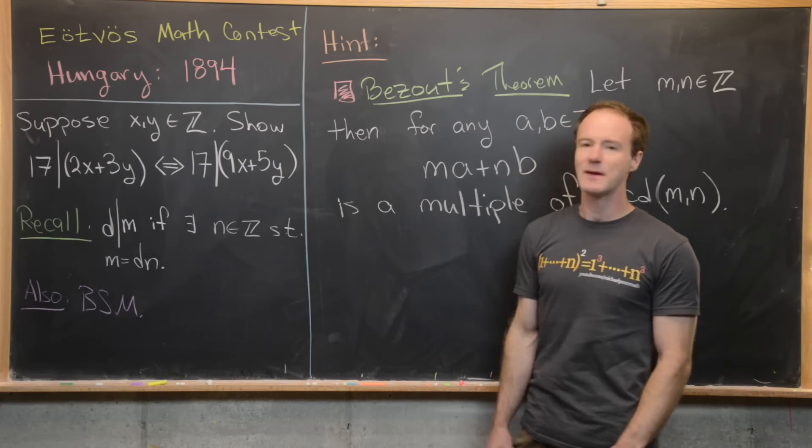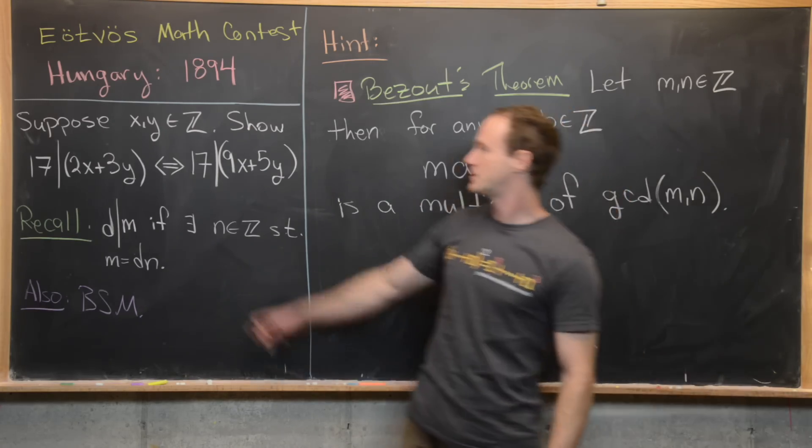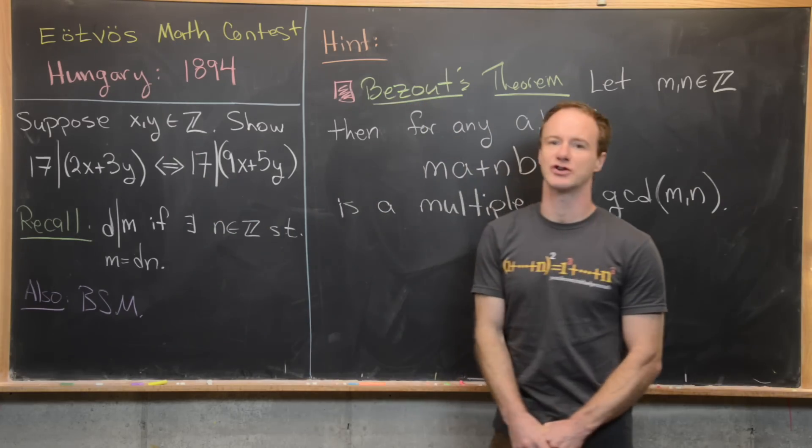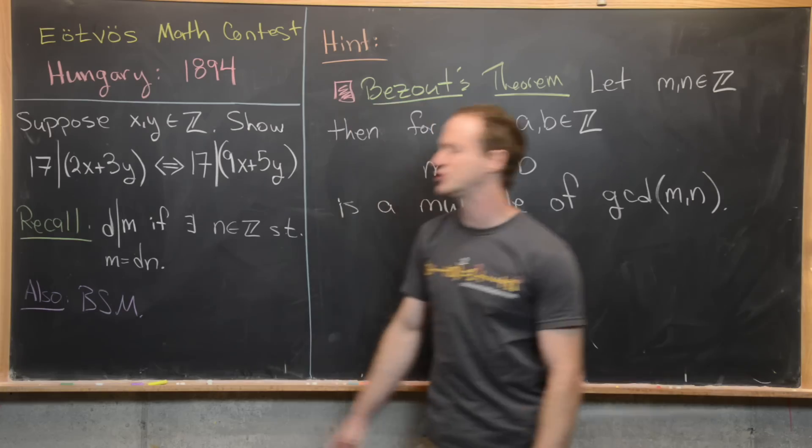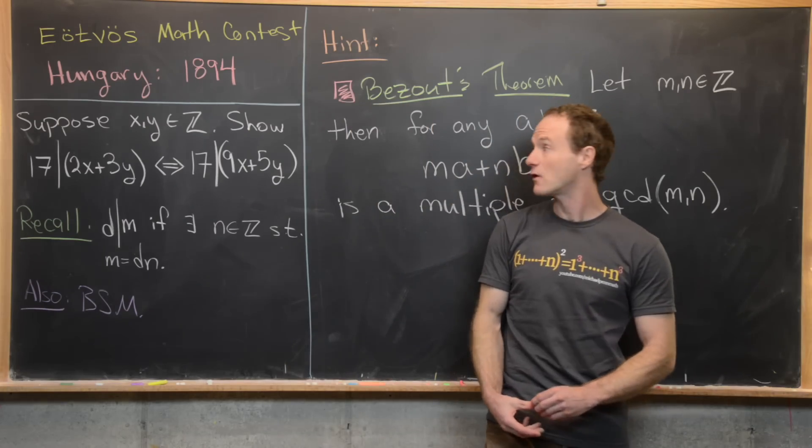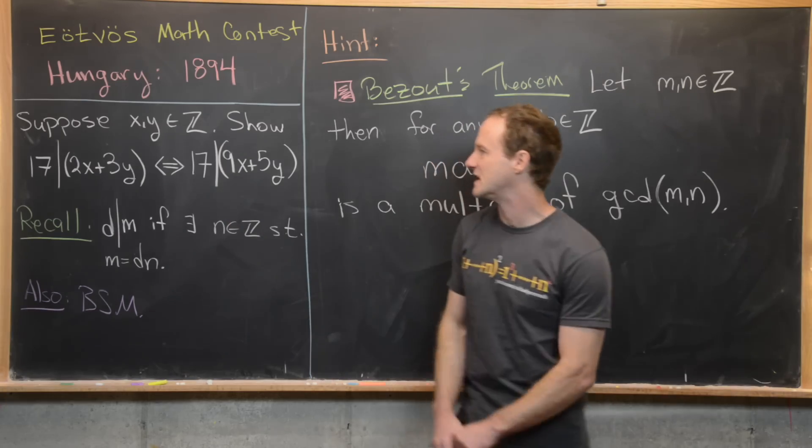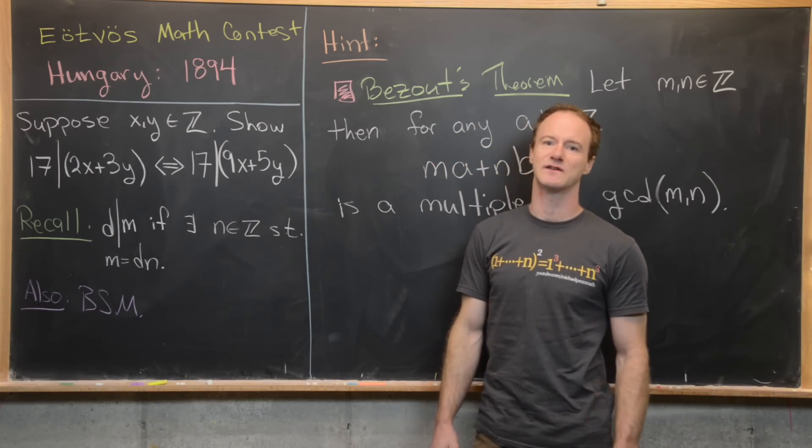Okay, so now let's maybe look at the problem. We want to suppose that x and y are integers. And our goal is to show that 17 divides 2x plus 3y, if and only if 17 divides 9x plus 5y.